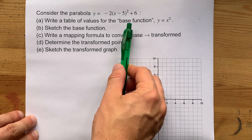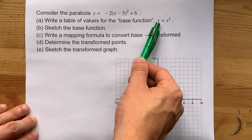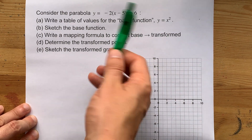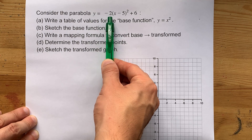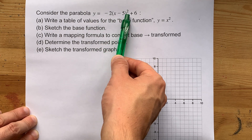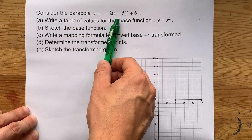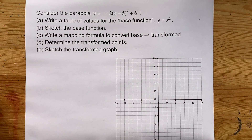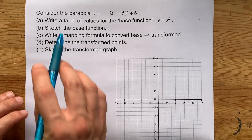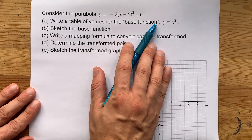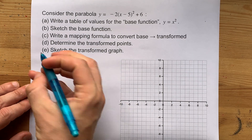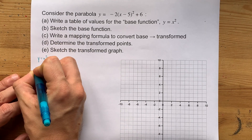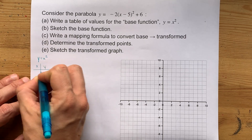We are going to start with the base parabola y equals x squared, which has no transformations applied to it, and then convert it into y equals negative 2 times x minus 5 squared plus 6, which has a vertex that's been moved, opens down, and has been stretched as well. This question asks us to write a table of values for the base function y equals x squared — the base function of all parabolas.